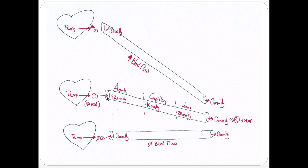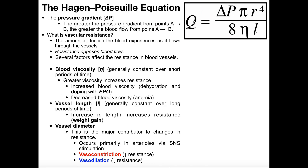We can also increase the size of this pressure gradient. For example, during exercise or a fight-or-flight response, the heart contracts faster and also with more force — force is the key. If the heart is pumping with more force, you'll have a higher blood pressure, greater than 98 mmHg. This represents a steeper gradient, maybe 120 mmHg. The pressure gradient here is 98 minus zero = 98, but there it would be 120 minus zero = 120. The larger the pressure gradient, the greater the blood flow.